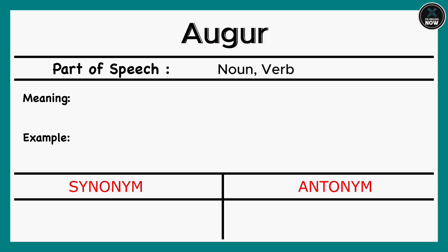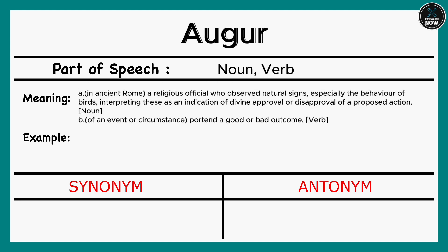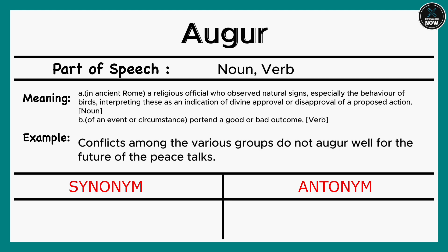Augur: A. In ancient Rome, a religious official who observed natural signs, especially the behavior of birds, interpreting them as an indication of divine approval or disapproval (Noun). B. Of an event or circumstance, portend a good or bad outcome (Verb). Example: Conflicts among the various groups do not augur well for the future of the peace talks. Synonyms: Portend, Presage, Bode.